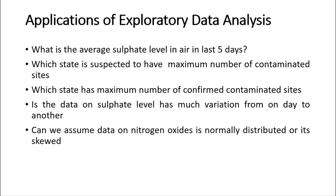The next question can be: can we assume data on nitrogen oxide is normally distributed or is it skewed? There are various ways to test normality. We can use graphs to visualize normality, use descriptive statistics to check it, or perform formal normality tests. In a graphical representation, if our data looks like a bell-shaped curve we can say it is normally distributed. Or if the mean, median, and mode are all equal, the data is normally distributed.